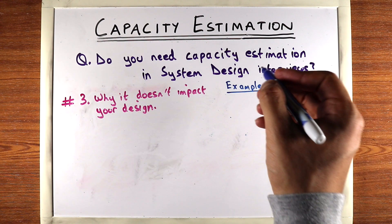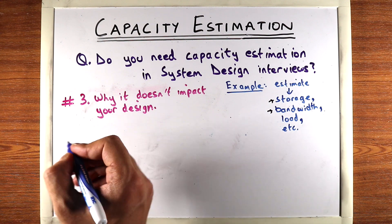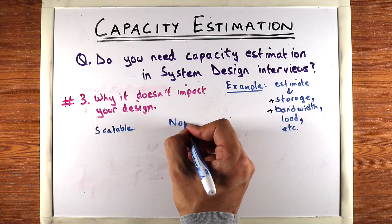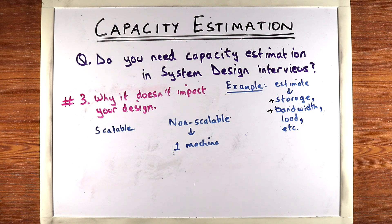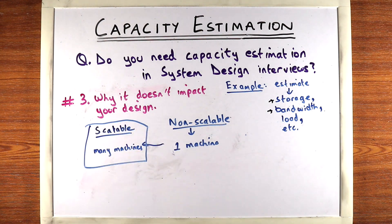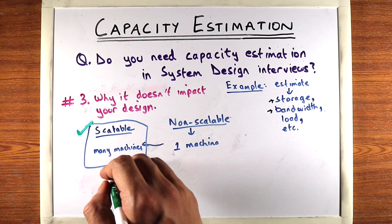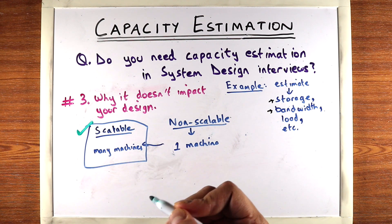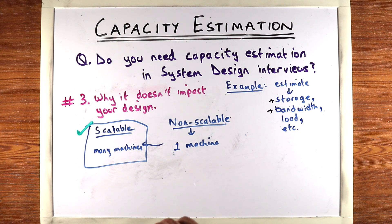Which brings us to our last point: why doing capacity estimations early on doesn't impact your design. Generally speaking, there are two kinds of designs in system design interviews. One is the scalable design, and the second is non-scalable design. In non-scalable design, typically you'll have one machine or one server, and the interviewer will ask you to start off a design — say, designing Facebook on one machine, then scale it out to many machines. The scalable design is usually the ultimate goal of your interview. These capacity estimations really don't affect your scalable design because you're making it scalable to millions of users and huge amounts of data. Calculating an exact number of how much storage you need really doesn't affect your design, especially your high-level design.